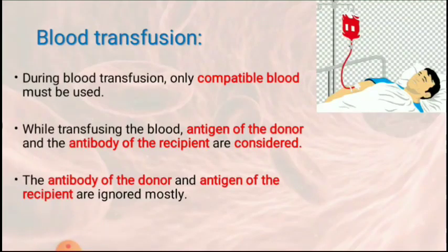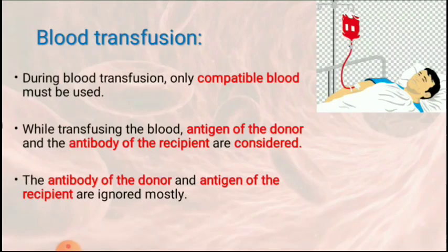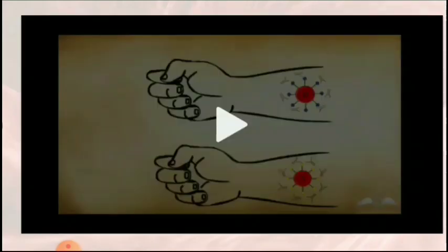Now, blood transfusion — transfusion means transferring blood from one person to another. During blood transfusion, only compatible blood is used, meaning blood that can safely be transferred among different persons. During transfusion, one thing is taken care of: the antigen of the donor — the one who donates blood — and the antibody of the recipient's blood are both considered. Let us see a video showing what happens when blood is transferred among persons having different blood groups.